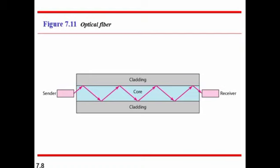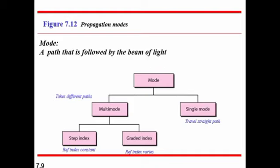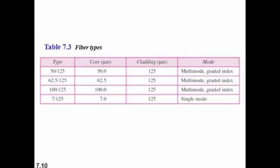Next are propagation modes — the different types of modes used to propagate a beam of light. A mode is a path followed by the beam of light. We can have single modes or multi-modes. In multi-mode, there are two categories: step index and graded index. In step index, the refractive index remains constant, but in graded index, the refractive index varies. There are also different fiber types, such as 50/125 micrometers, where the core is 50.0 micrometers and the cladding is 125 micrometers.